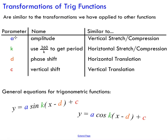Let's look at 'a' first. The 'a' parameter tells you the amplitude of the function. This is very similar to a stretch or compression — it behaves in the exact same way. If 'a' is greater than one, you have a vertical stretch by a factor of that 'a' value. If 'a' is between zero and one, you have a compression. The amplitude changes how far the max or min is from the central axis of your graph.